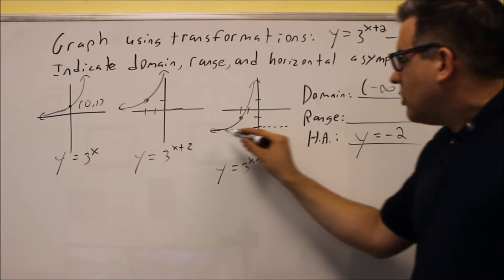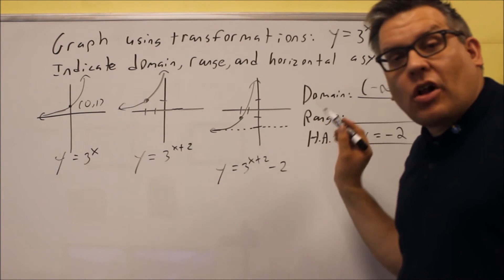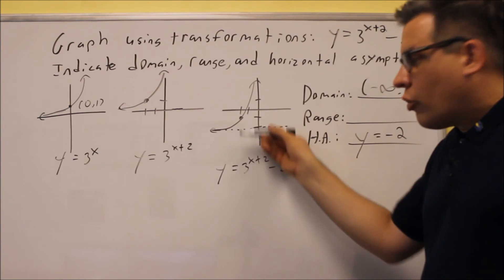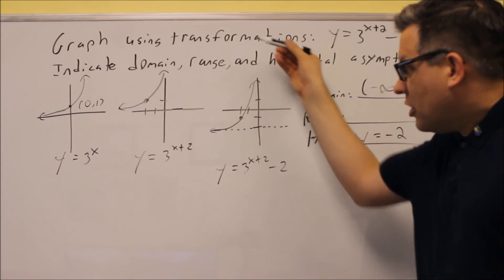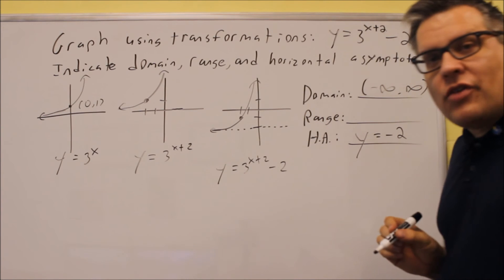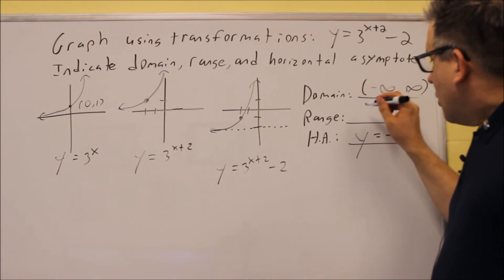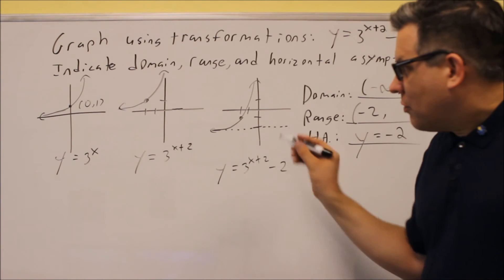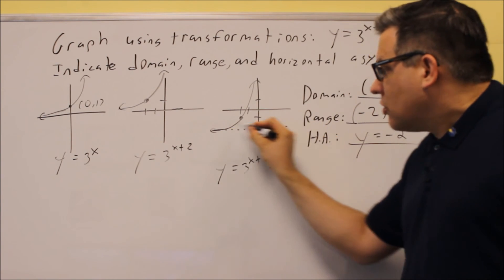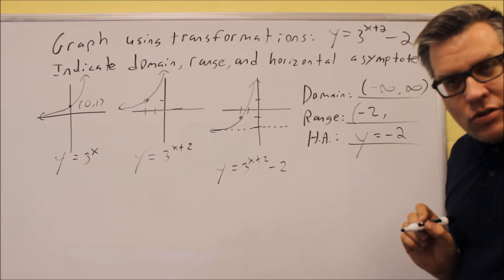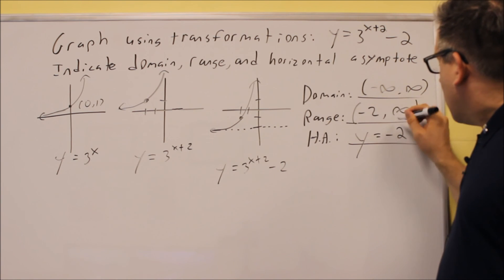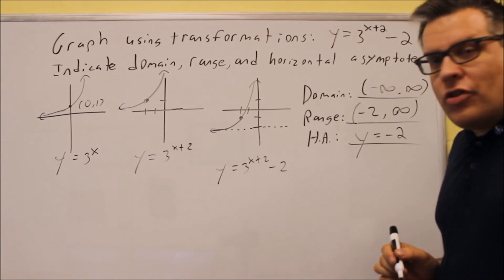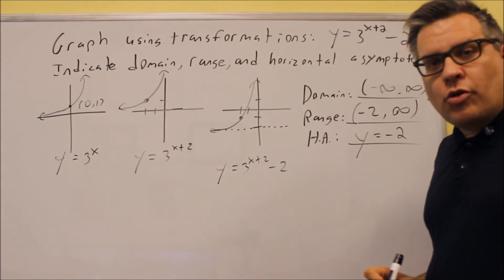Now your range has to do with where your horizontal asymptote is. There's no graph that appears below the horizontal asymptote, so it's all going to be above that y value of negative 2. So we're going to put negative 2, and remember that, as I mentioned before, the graph is never actually going to reach the value of the horizontal asymptote. So we've got to put a parenthesis on that, and it's going to go up to positive infinity, so that would be now your range.